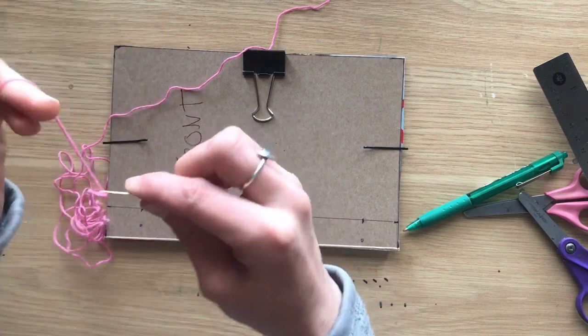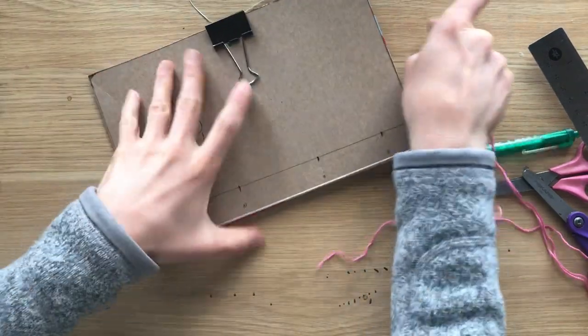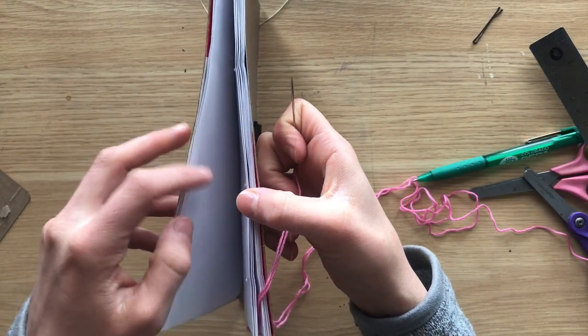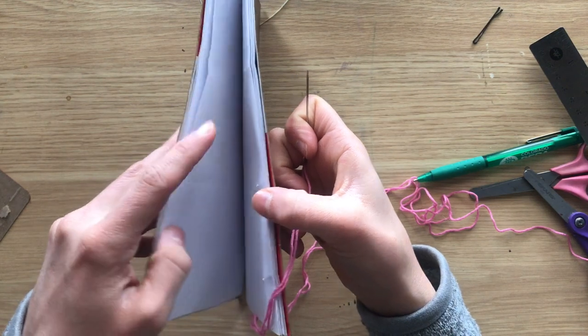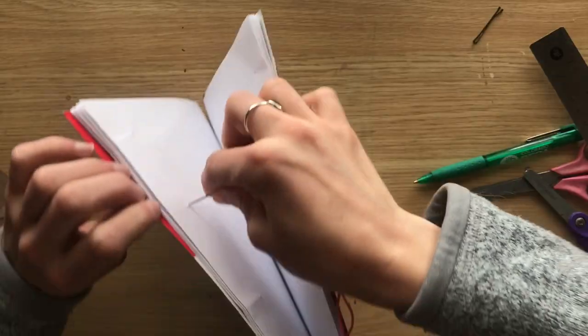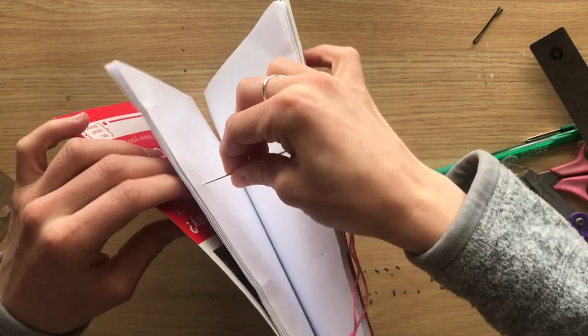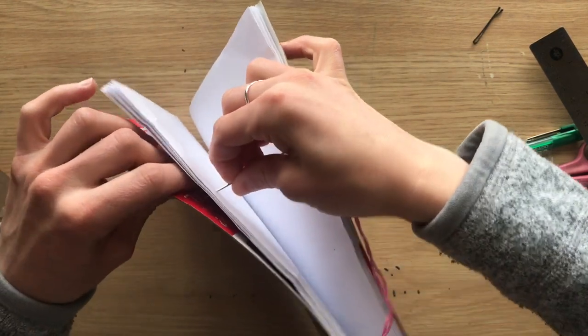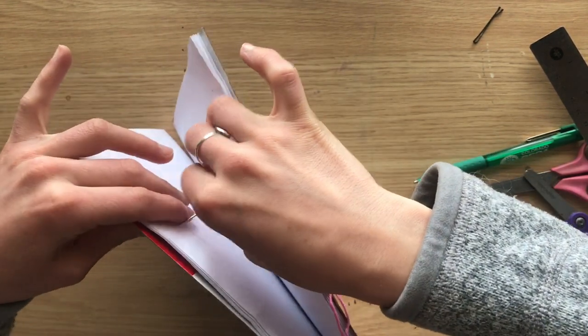So we're getting really close to binding the book. Take your side clips off if you put those on, and then open up your book and find the fifth page in there. That's the middle of your book.